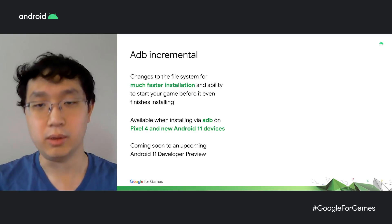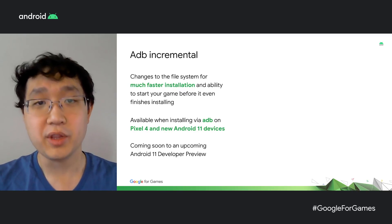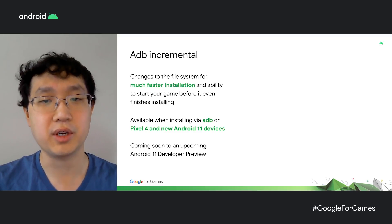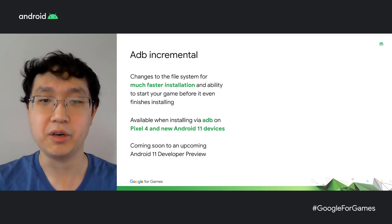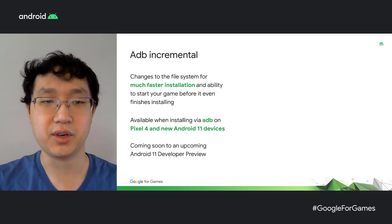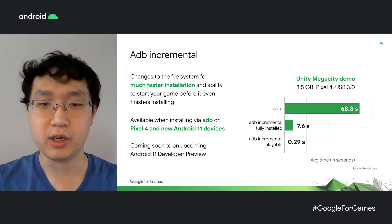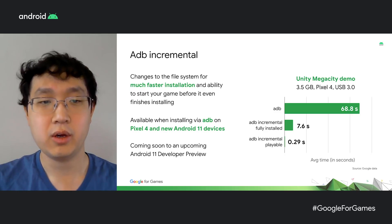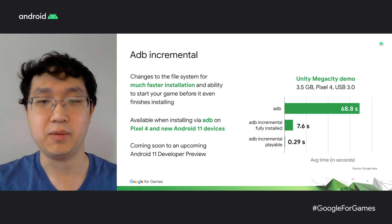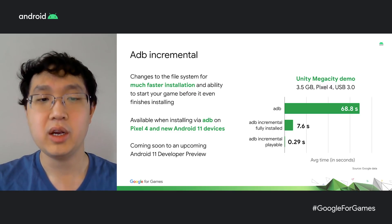We've heard from many of you that you wait too long for your game to deploy to your device. With Android 11, we're excited to announce ADB Incremental, a significant improvement to the ADB deploy process that results in iteration speeds that are orders of magnitude more efficient than previous versions. Available on Pixel 4 and new Android 11 devices, ADB Incremental takes advantage of changes to the file system to increase your productivity, and even offers you the ability to start your game before it finishes installing. Here are some results from trying this out on Unity's Mega City game demo — we went from waiting almost a full minute to install, down to seconds for a full installation and under a second for the game to be launched. Look for more information and documentation about ADB Incremental in an upcoming developer preview.